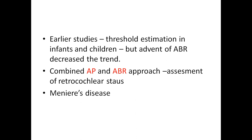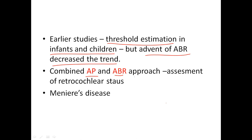Earlier studies used ECochG for threshold estimation in infants and children, but after the advent of ABR it is not highly used for diagnostic purposes. Cochlear microphonic has less clinical application individually, but when combined with compound action potential and ABR, it will give you the retrocochlear status. A primary application is in Meniere's disease diagnosis.